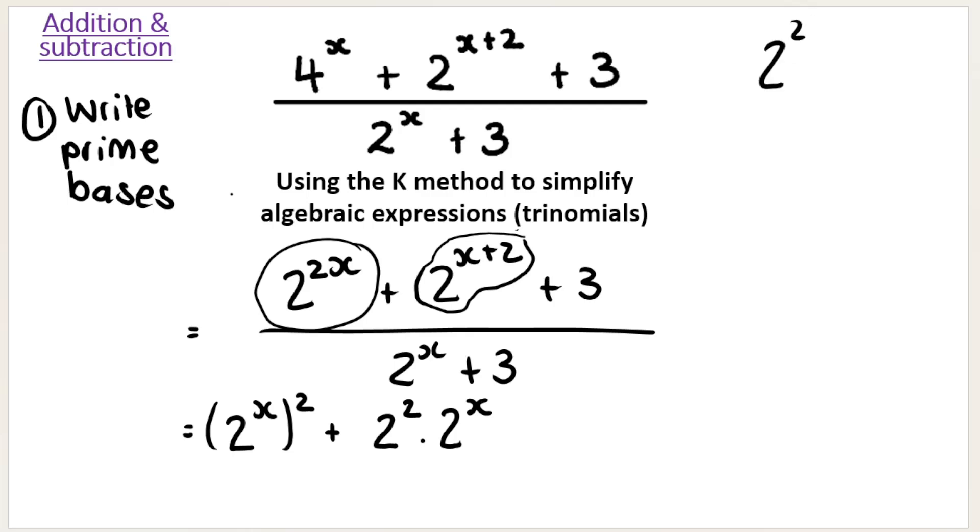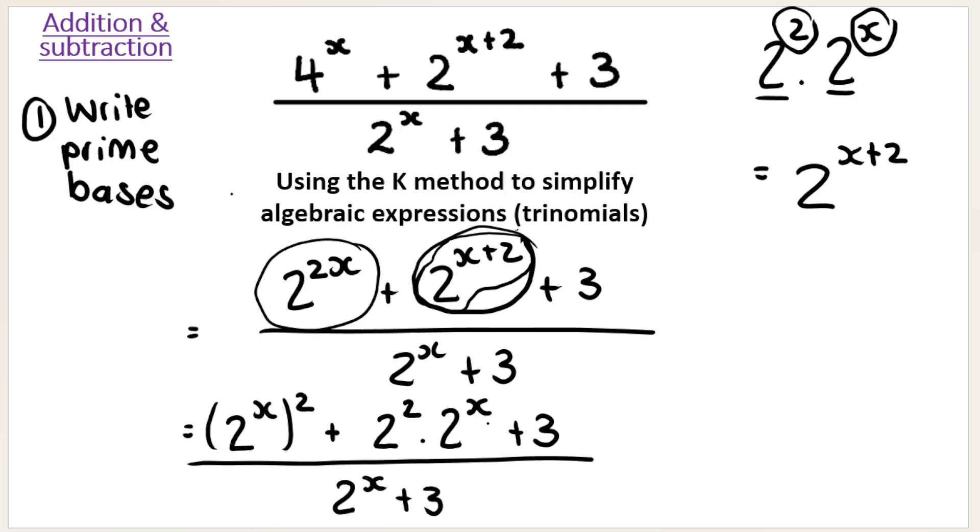If this is still confusing you, if someone had to say to you, I'm giving you this, now simplify that for me, I hope that you would know that the bases are the same, so you keep the base and you add the exponents. It's two plus X or X plus two, same thing. So rewriting it like this isn't changing anything. It is still this, it's just written in a different format. And then we have plus three, and we're dividing that by two to the power of X plus three.